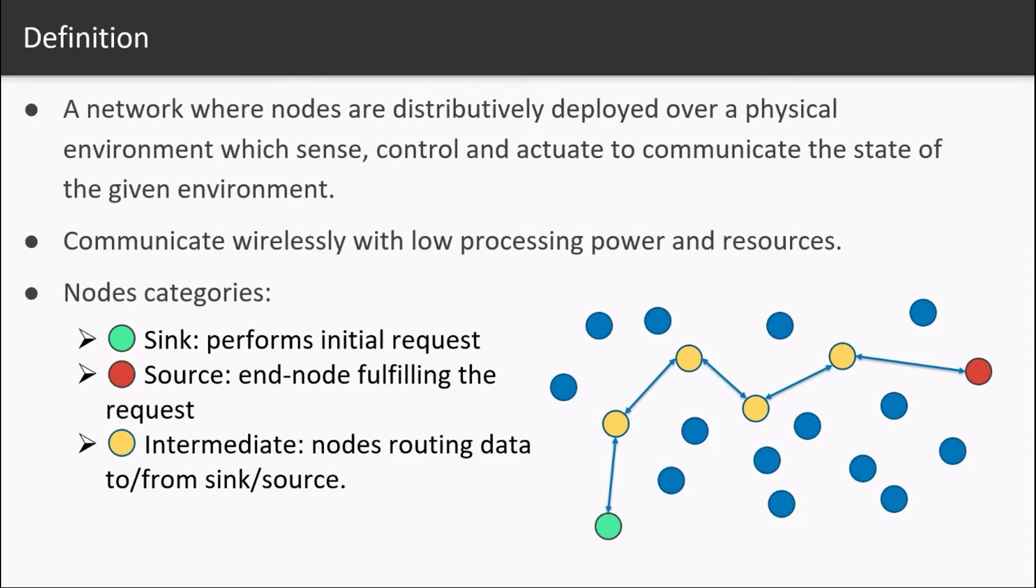For example, a green node is interested in knowing the moisture level of the area where red node is installed. It initiates the request which goes and comes back all the way to and from the source node passing from the yellow nodes, the intermediate nodes.